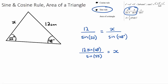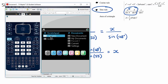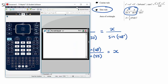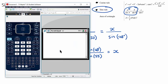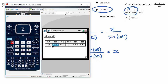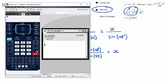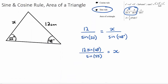We can solve this on our calculator. We need to be in degrees mode — make sure we are in degrees mode, not radians. Typing in 12 times sine of 48 over sine of 55 gives us x equals 10.9 centimetres to three significant figures. So we use the sine rule when we have two angles and one side length and want to find another side length.